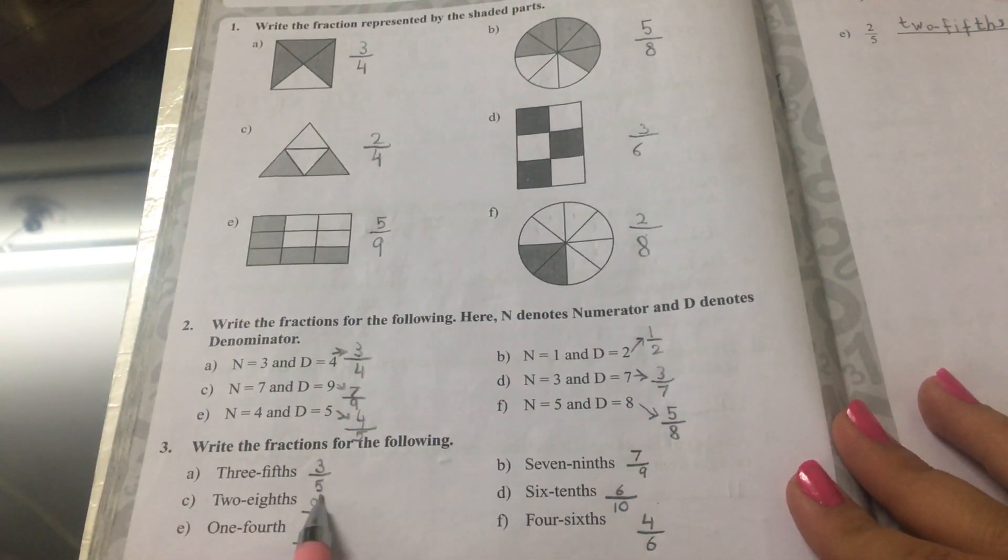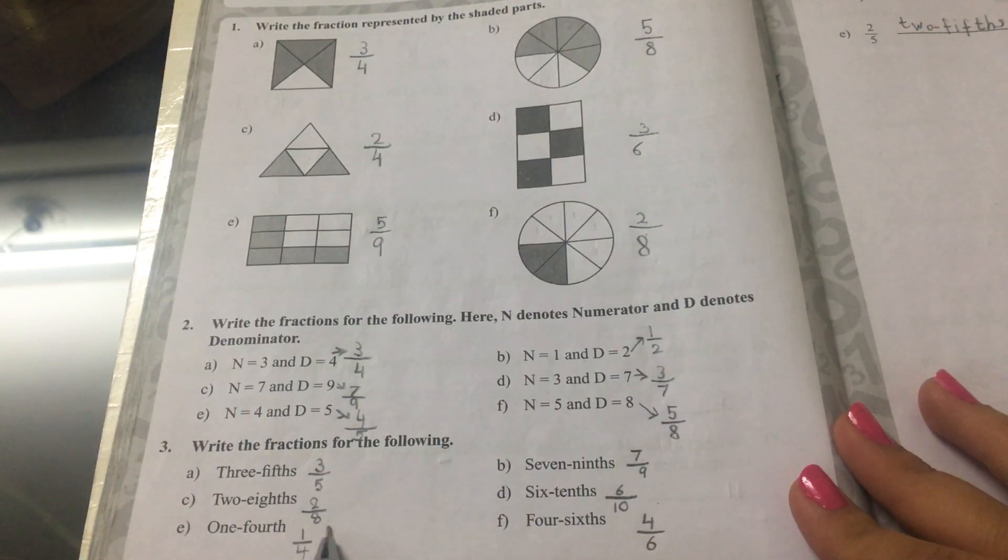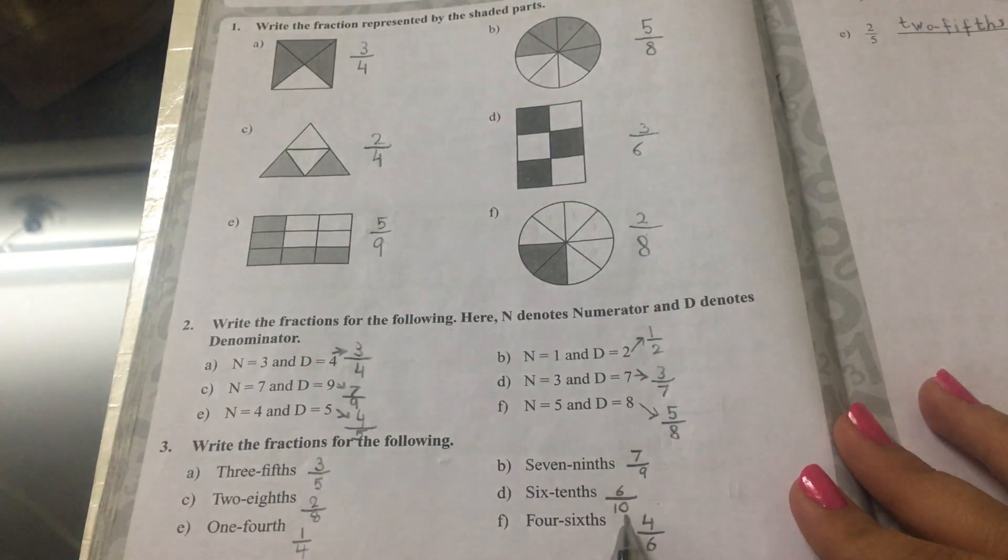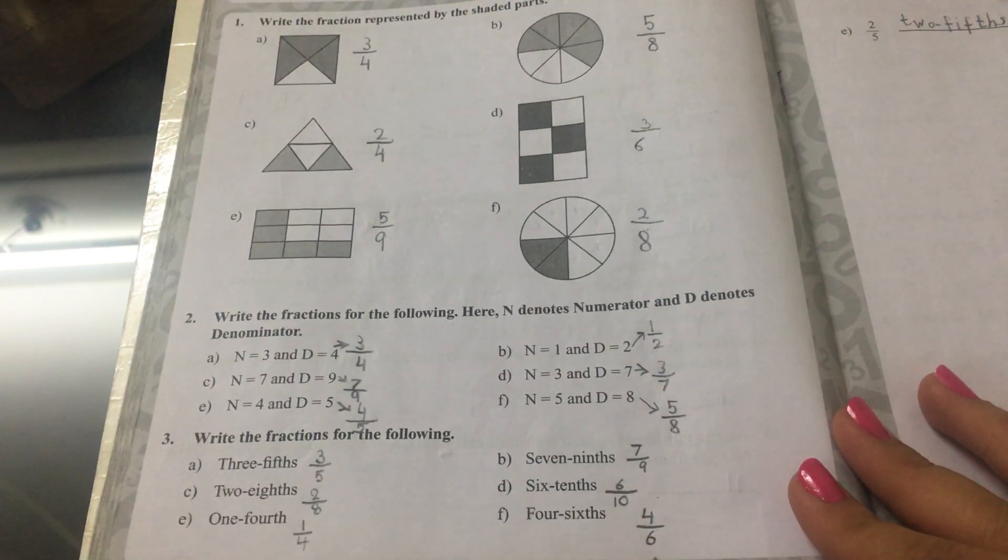Write the fractions for the following. 3 fifths, 7 ninths, 2 eighths, 6 tenths, 1 fourth, 4 sixths.